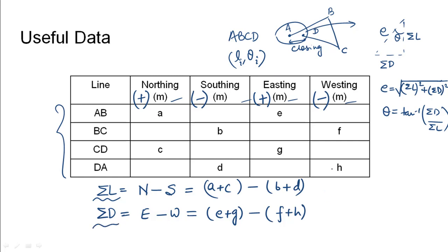Once we have the summation of latitude and departure using these two we can find the closing error as summation of latitude whole square plus summation of departure whole square. And the angle of closing error can be found as tan inverse of summation of departure by summation of latitude as we saw here.